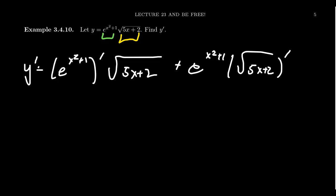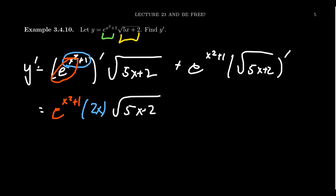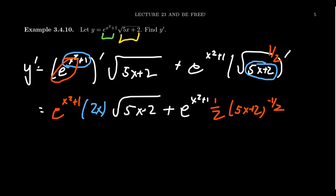Now the chain rule comes in for each part. For e^(x²+1): the inner function is x² plus 1, and the outer function is the natural exponential, whose derivative gives back itself. So the outer derivative gives e^(x²+1), and the inner derivative — the derivative of x² plus 1 — gives 2x. That times the square root of (5x plus 2) which was already there. For the square root of (5x plus 2): the inner function is 5x plus 2, and the outer function is the one-half power. By the power rule we get one-half times (5x plus 2) to the negative one-half, times the inner derivative, which is 5.